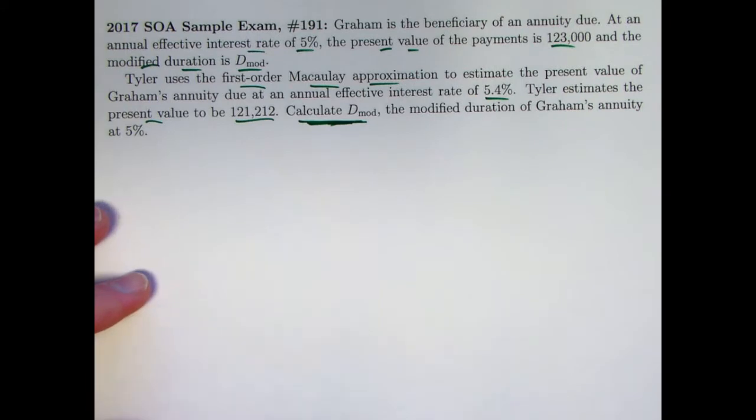Again, our goal is to calculate the modified duration of Graham's annuity at that 5% interest rate. So it's really just a matter of using the formula for the first-order Macaulay approximation and solving it correctly and not making mistakes, not making silly mistakes like I made when I first solved this.